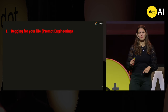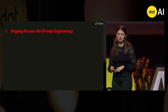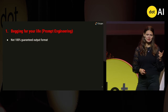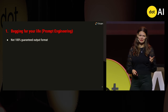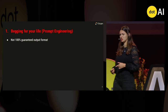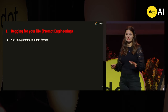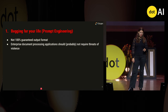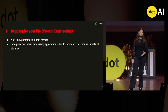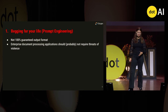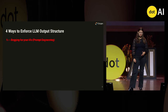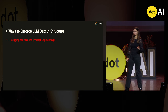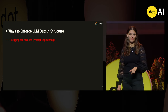But prompt engineering is not a great way to get models to do what we want for two reasons. First, it's not 100% guaranteed — even when you ask really nicely, a toddler still might not do it. More importantly, document processing applications probably shouldn't have threats of violence in them. It's probably not best practice. So this is probably not how we're going to enforce our LLM structure.